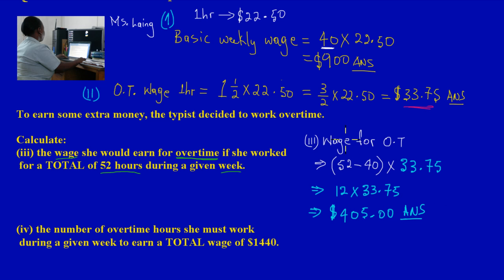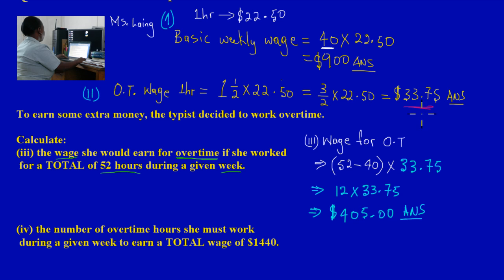So that's our answer. To find the wage for overtime during that week, we subtracted the regular 40 hours she would have worked, leaving 12 overtime hours, and multiplied those overtime hours by the overtime rate from part 2. Now let's look at part 4 quickly.